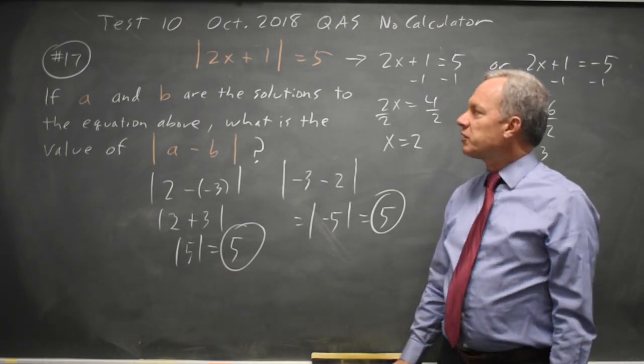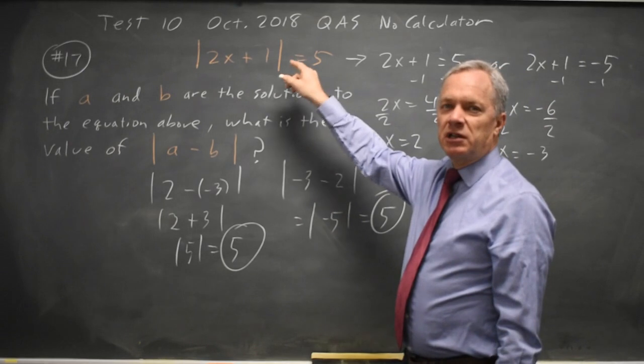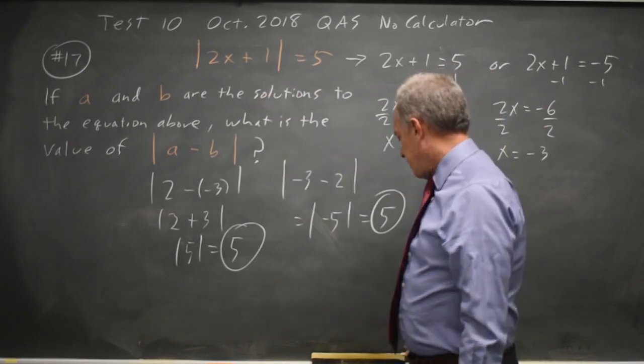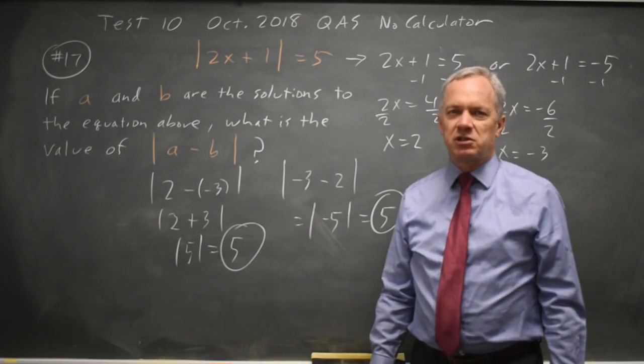And remember that if an absolute value equals, for example, 5, then the number you're taking the absolute value of is either 5 or negative 5, and that gives you the two equations for the two solutions they're asking about.